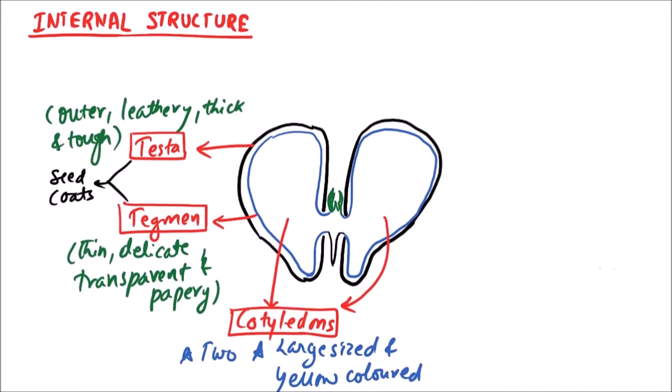And the important thing is that the food is stored in cotyledons and not in endosperm. This is a type of non-endospermic seed.